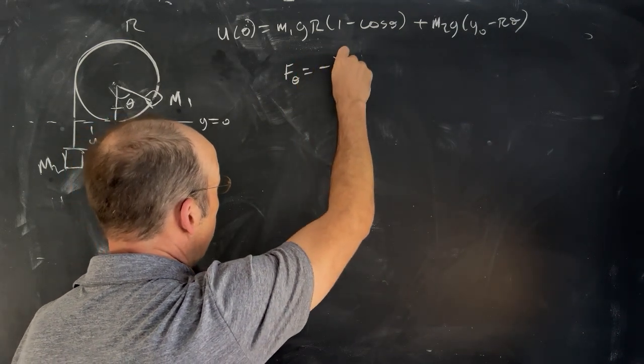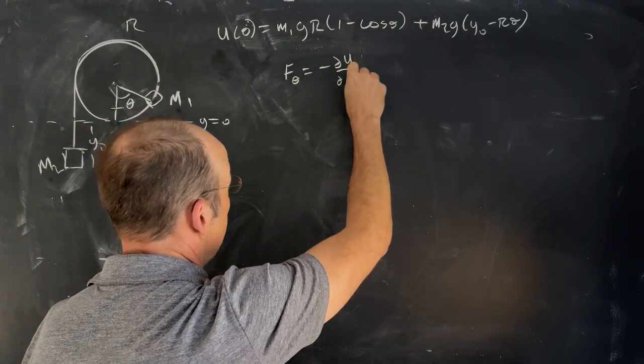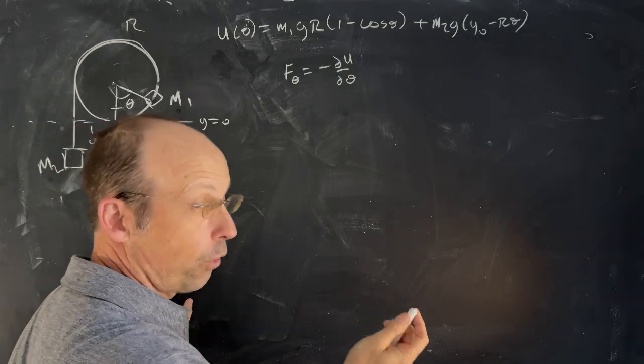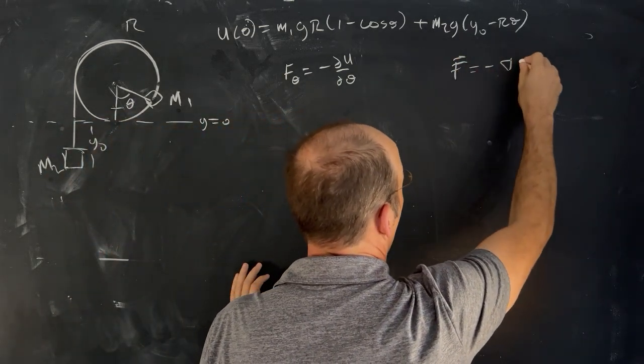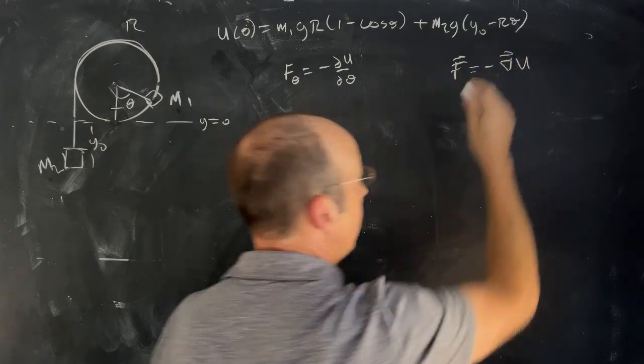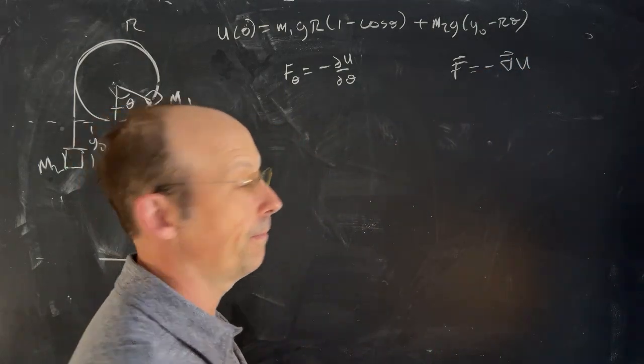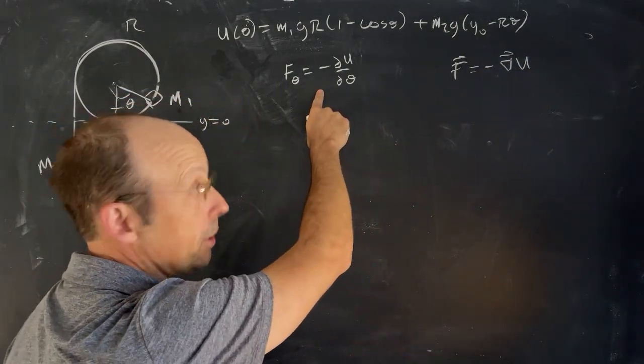F theta is negative the partial of U with respect to theta. So remember our forces in general, F is negative del U. That's the del operator. I call it del. But we're just talking about the theta direction here. We only have one dimension.